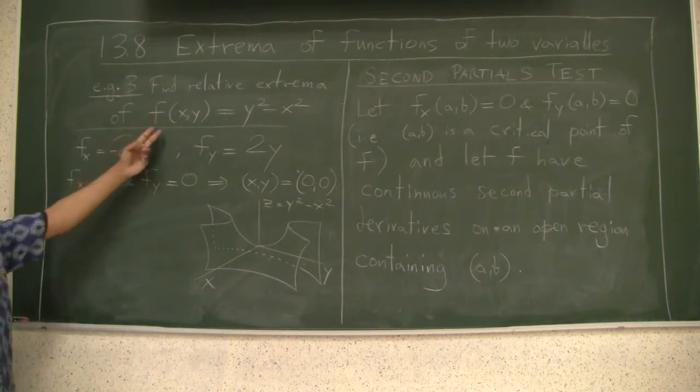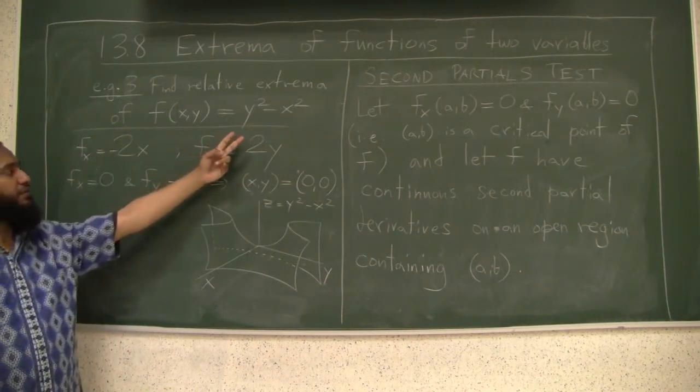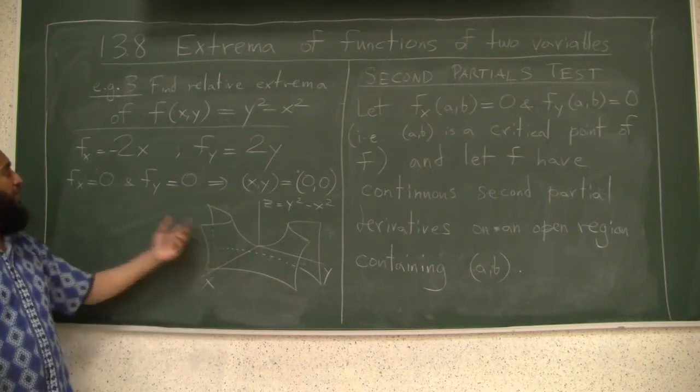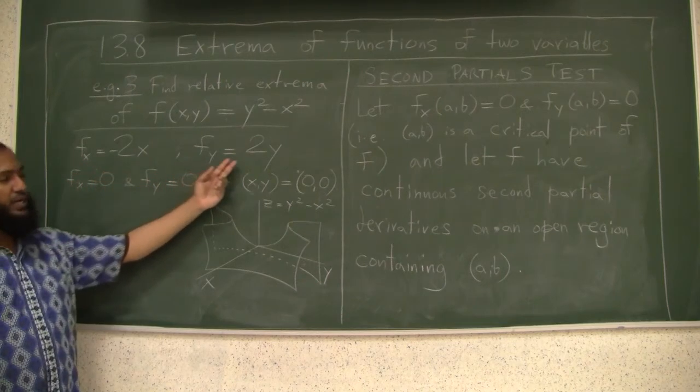Find relative extrema of f(x,y) equal to y squared minus x squared. Now we have seen this function when we did the quadratic surfaces. This is the saddle surface. Partial derivative with respect to x is negative 2x, with respect to y, 2y.